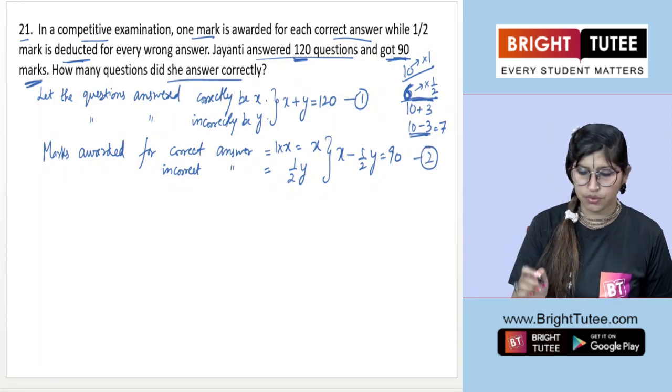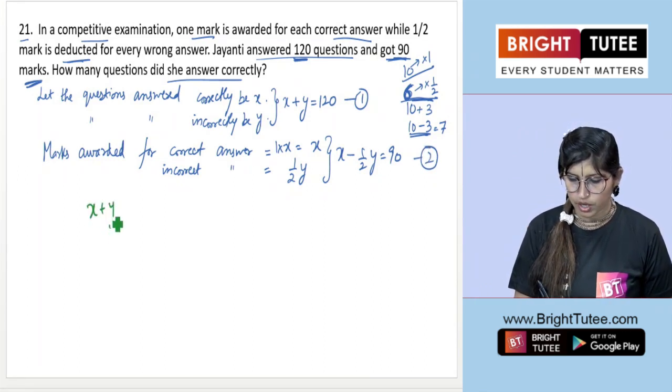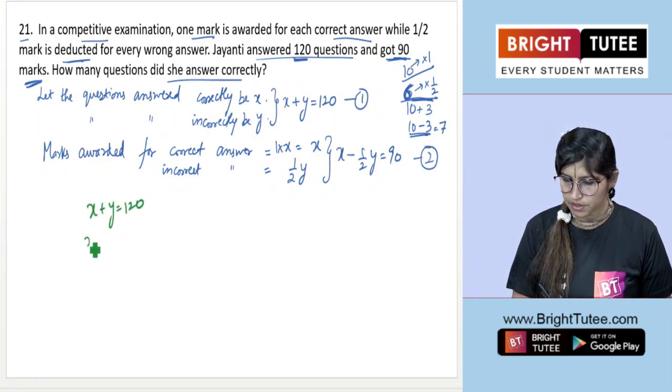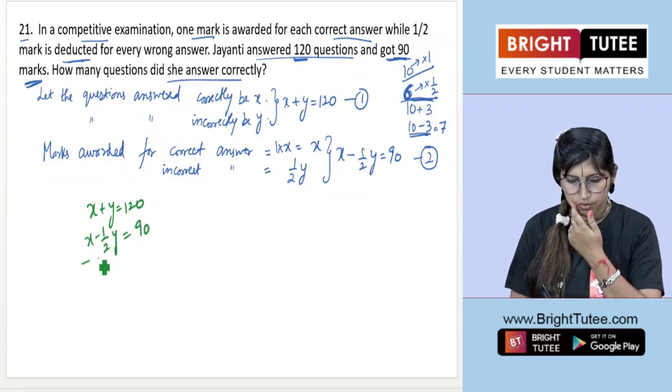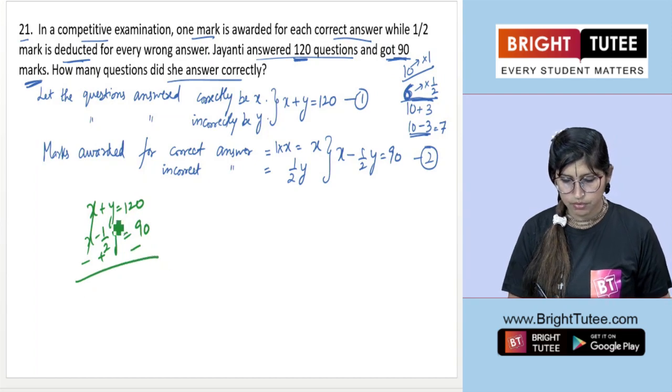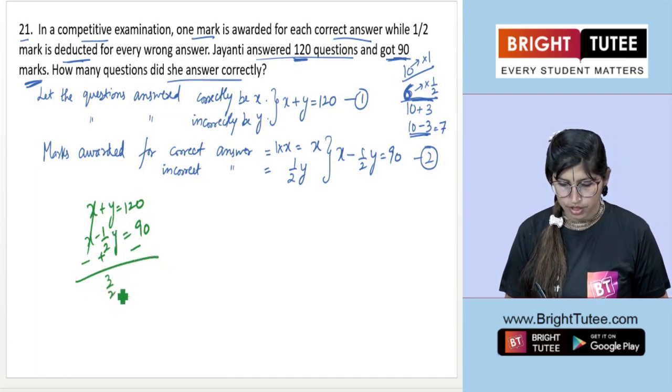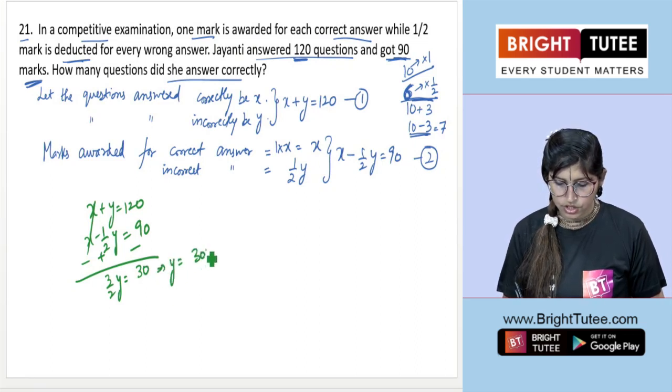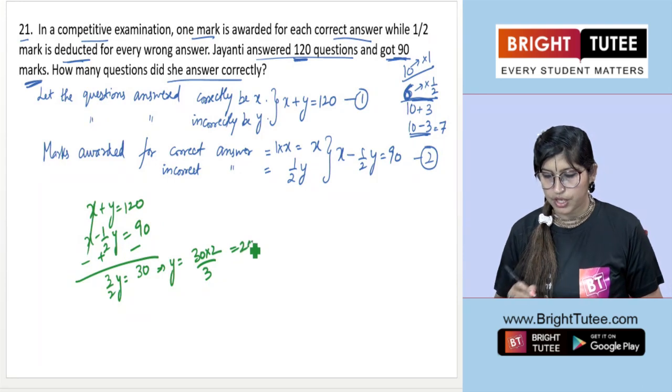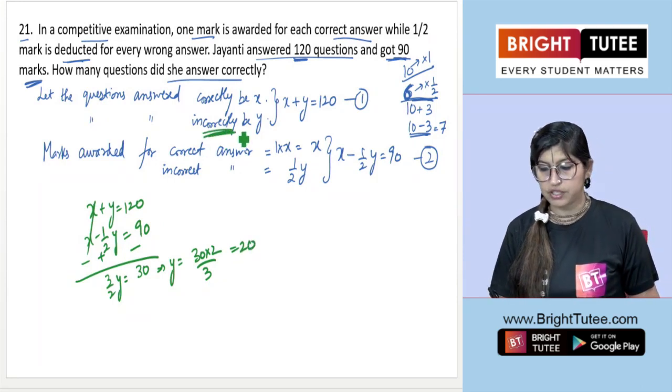Let's solve this. x + y = 120 and x - (1/2)y = 90. Subtracting both equations: (1/2) + 1 is (3/2)y, and 120 - 90 is 30. So y = 30 × (2/3) = 20.